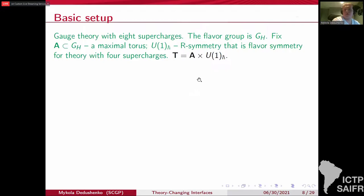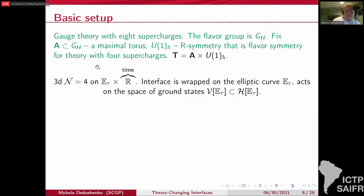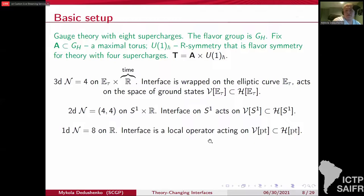We will be working in three, two and one dimensions. When we are in three dimensions, we place the theory on the product of elliptic curve and time Euclidean timeline. And the interfaces will be wrapped on the elliptic curve. So they act on the corresponding Hilbert space and also on the space of ground states since the supersymmetric interfaces, as we will see.